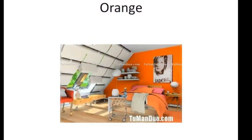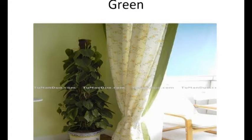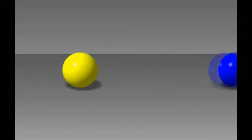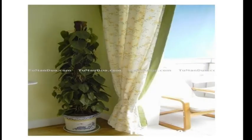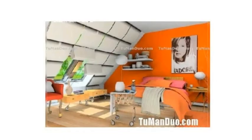When two primary colours are mixed, we get a secondary colour. Let us observe. When yellow is mixed with red, we get orange. When red is mixed with blue, we get purple. Green, the secondary colour, is obtained by mixing yellow and blue. The secondary colours are orange, green and purple.